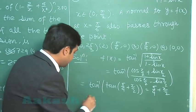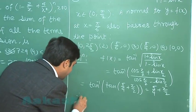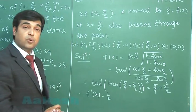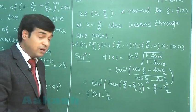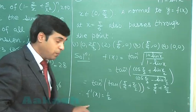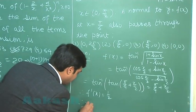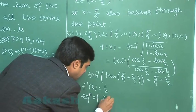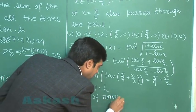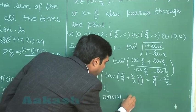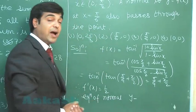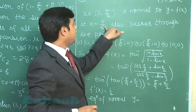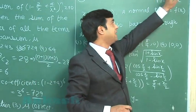On differentiating, f'(x) is the constant 1/2, so the slope of the normal is minus 2. The equation of the normal is y minus y₁ equals minus 2 times (x minus x₁), where x₁ equals π/6.